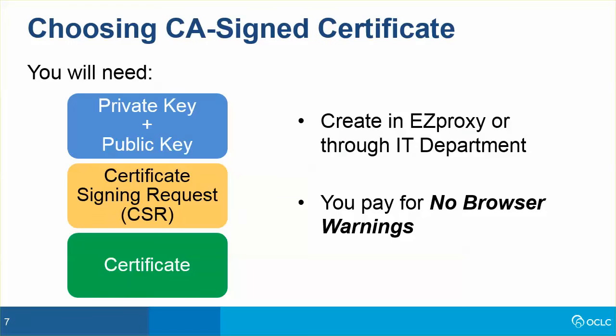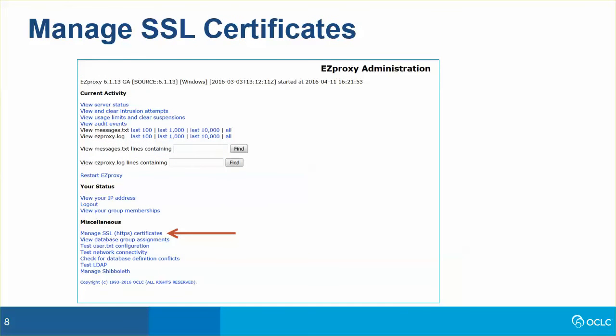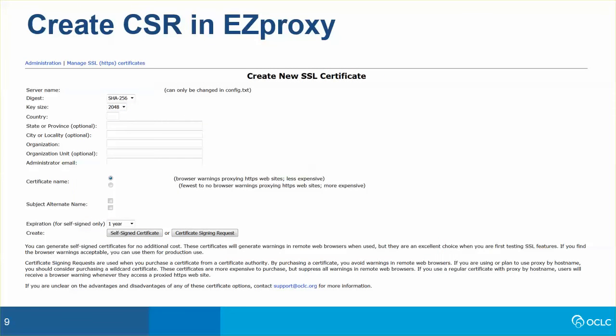If you choose to use a Certificate Authority signed certificate, you will need a private key, a public key, a certificate signing request or CSR, and a certificate. You can create the private key and the CSR from your EasyProxy administration page found under Manage SSL Certificates. EasyProxy will create the key and the CSR, then you must send the CSR to a Certificate Authority, and the Certificate Authority will send you back a certificate file which you can copy and paste into the Manage SSL Certificate page in the EasyProxy administration interface.